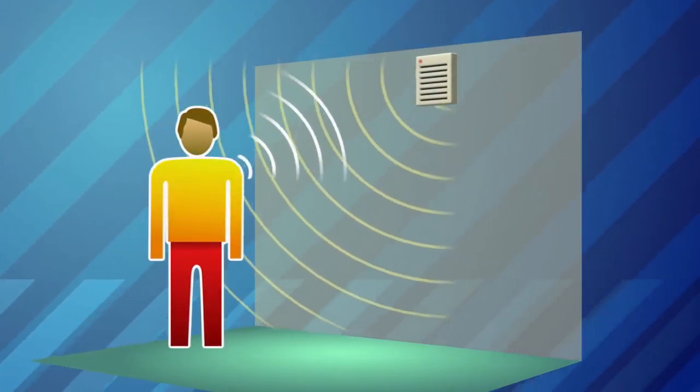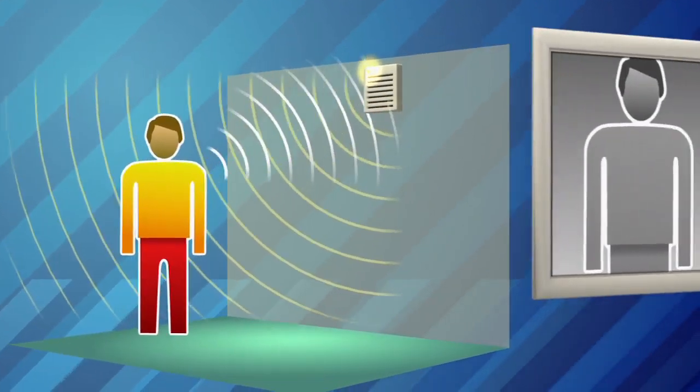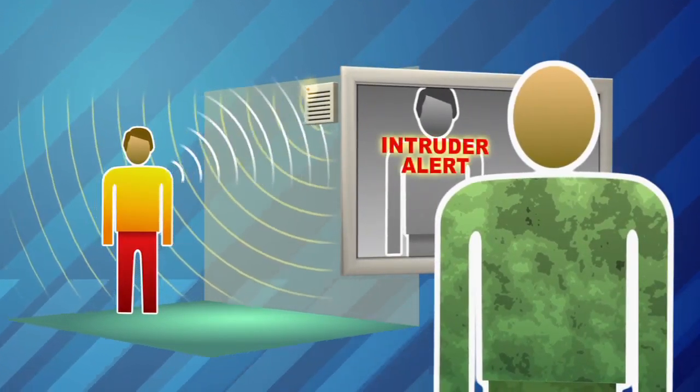After a sensor detects something, the information can be converted into electrical signals, so a computer or a person can respond to it.